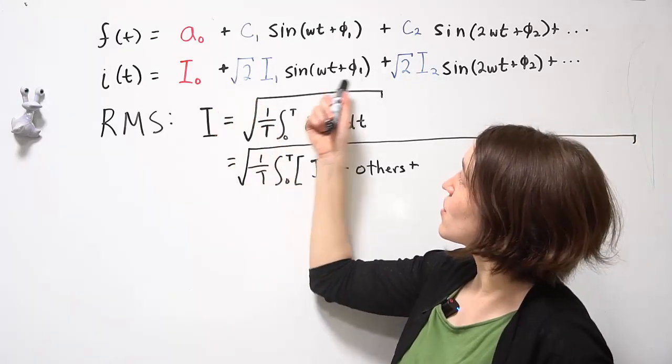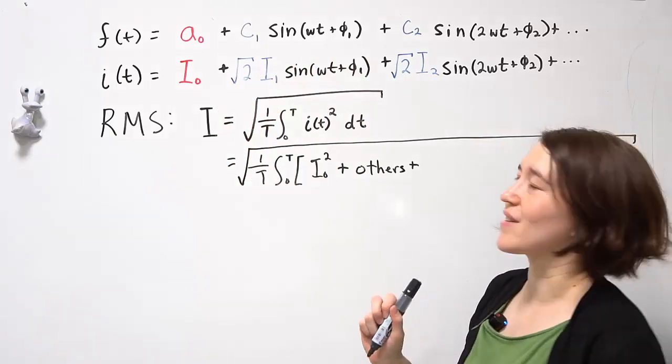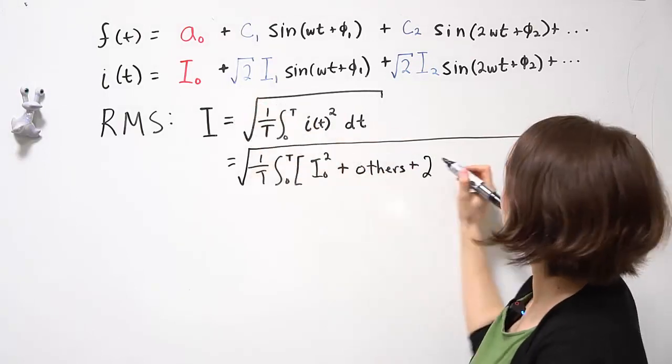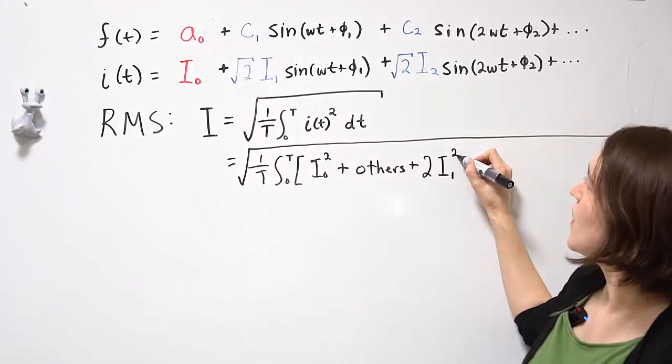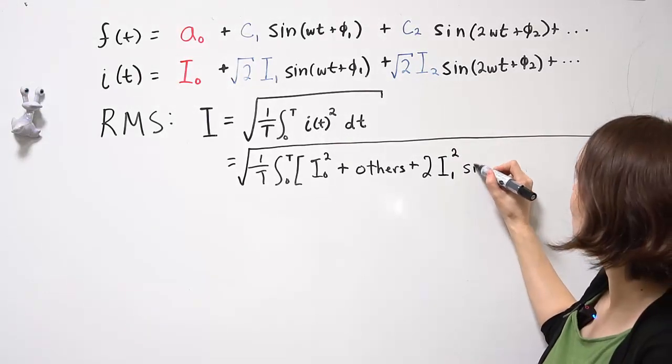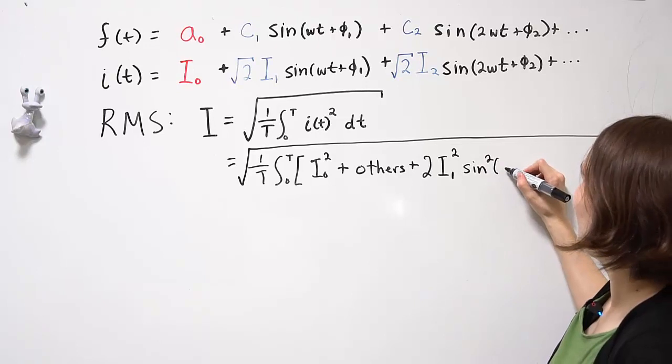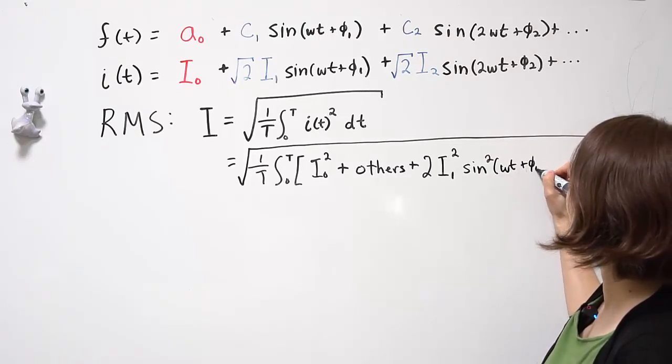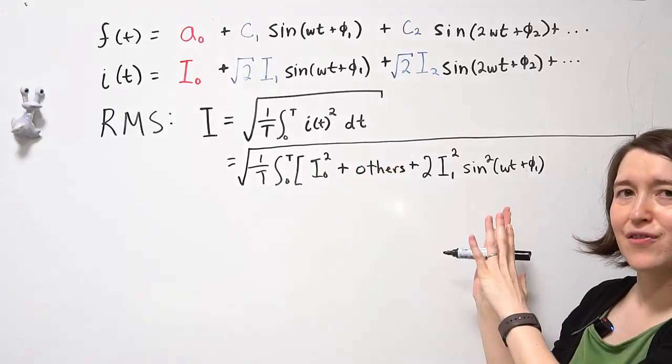Then we need to take this term, multiply it by itself. Here we will actually get something out. So I'm just going to write the format here. So squared we would get 2 and then I1 squared. And I'm going to write it as an I squared, or a sine squared, omega t plus phi 1.